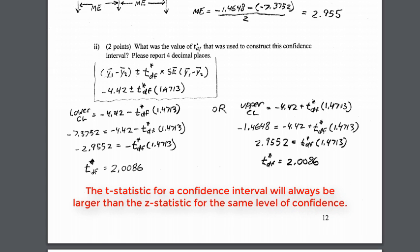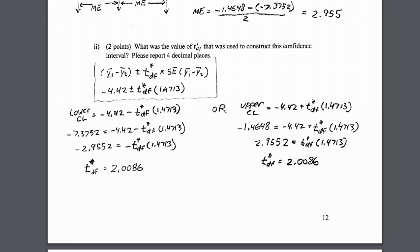Since the t is always greater than the z, we would have to get an answer of 1.96 or greater for this to be plausible. And 2.0086 is a very plausible answer and is the correct answer.